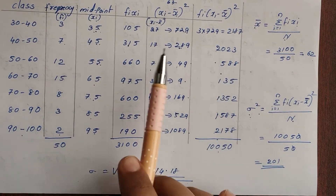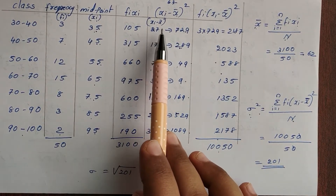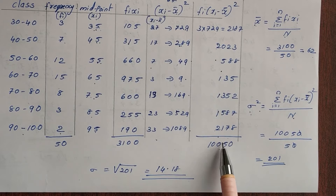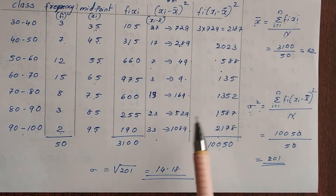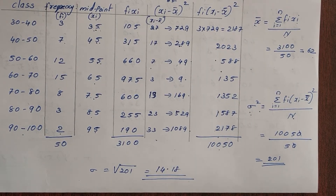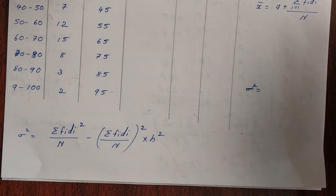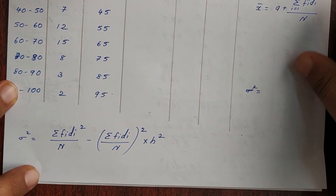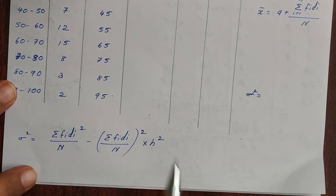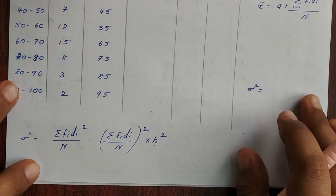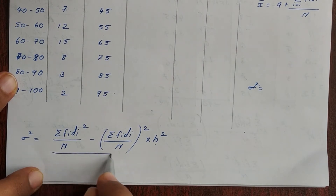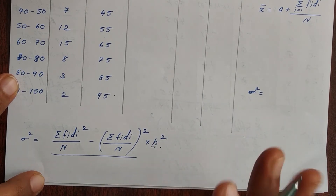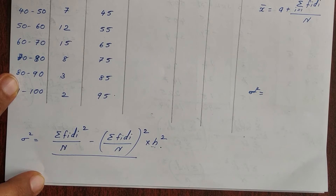Now we have seen that this calculation — squaring, multiplying, and adding — is time consuming. So there is a shortcut method. We have already covered discrete frequency distribution; for continuous frequency distribution we multiply by h², so there is a small change.